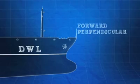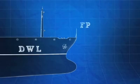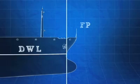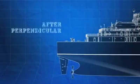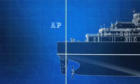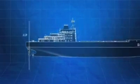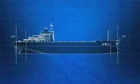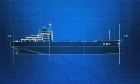The forward perpendicular, or FP, is a vertical line drawn at the intersection of the design waterline and the foreside of the stem of the hull. The after perpendicular, or AP, is a vertical line drawn at the intersection of the design waterline and the aftmost point of a ship's hull. For most commercial vessels, this is generally where the rudder post is located.